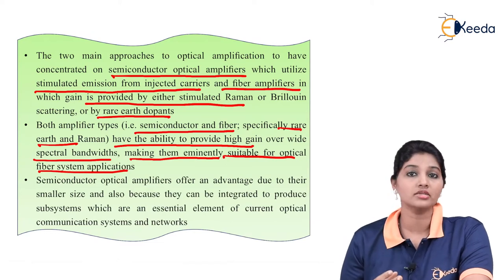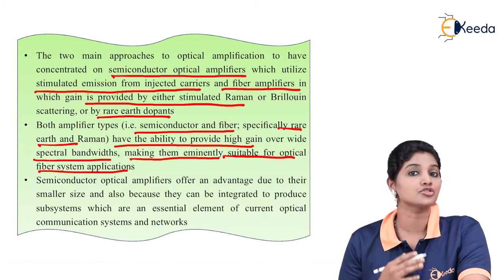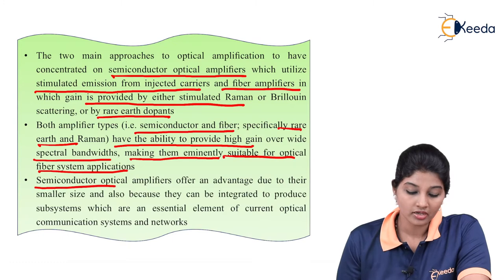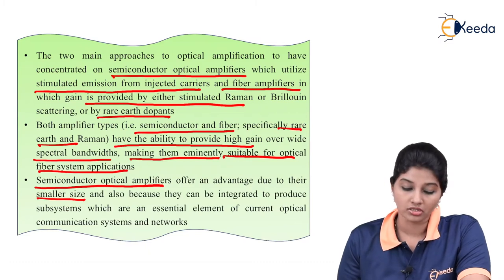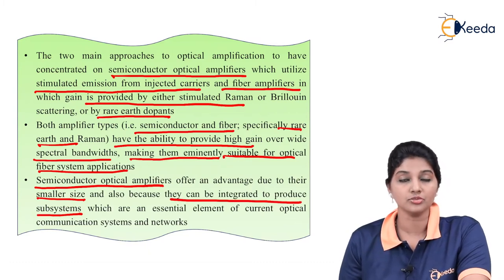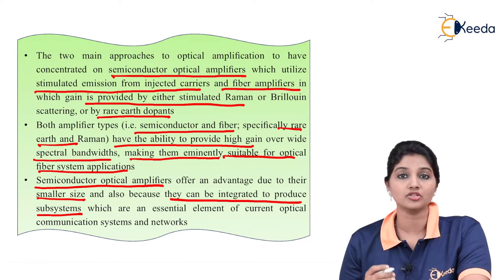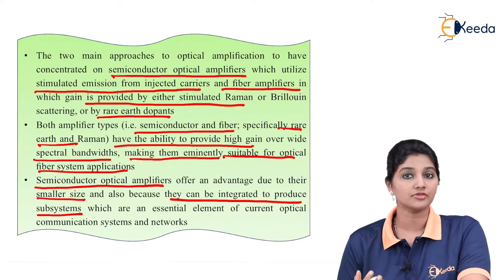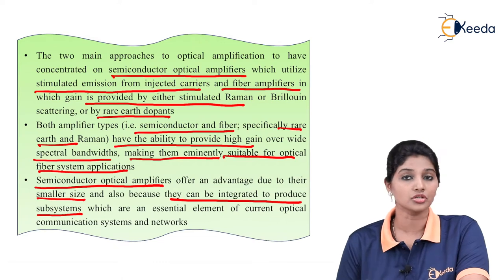We can use these amplifiers, especially the rare earth dopant amplifier and the Raman amplifier, for a variety of applications as they provide maximum gain over a wide spectrum of bandwidth. Semiconductor optical amplifiers offer an advantage because they are smaller in size and can be integrated to produce subsystems which become an essential element of current optical communication systems and networks. In most applications, the optical amplifiers used are semiconductor optical amplifiers, as they are available in smaller size and provide high enough gain for a variety of applications.